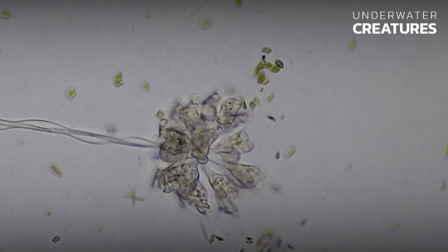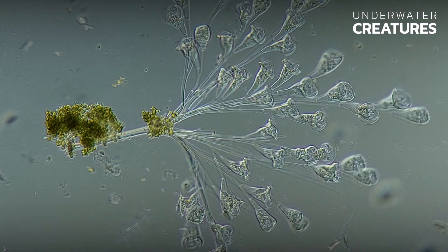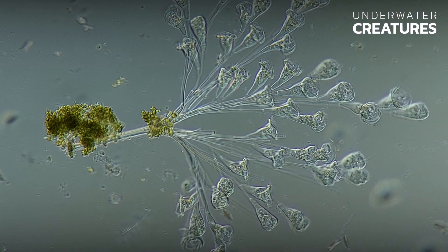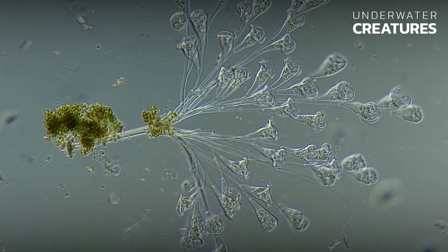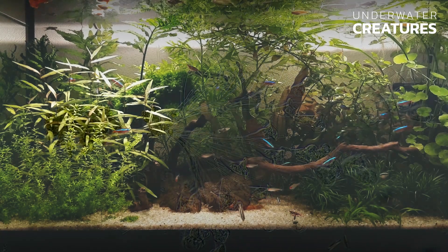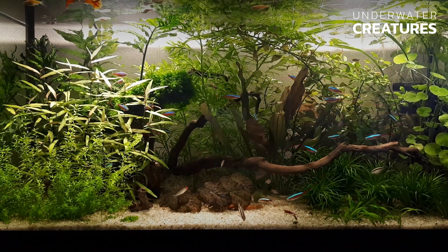Thus the ciliated infusoria help in the breakdown of organic matter, dwelling not only on the aquarium glass but also in the filtration system, contributing to the purification and improvement of the water quality in the aquarium.